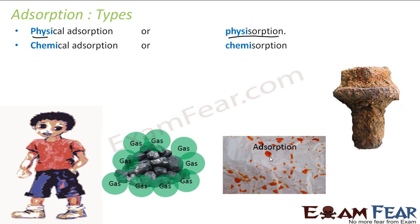Next is chemical adsorption, also called chemisorption. A good example is rusting of iron. Here, a chemical reaction actually takes place on the surface.